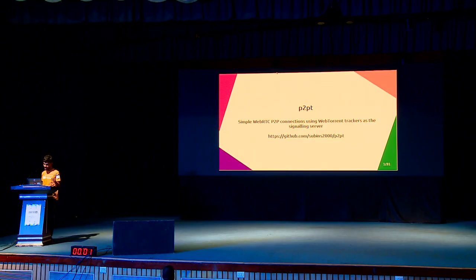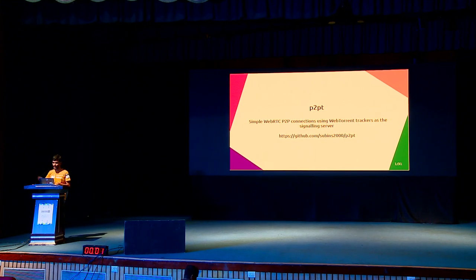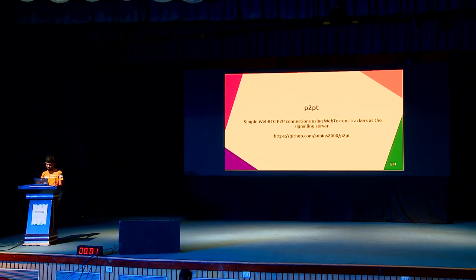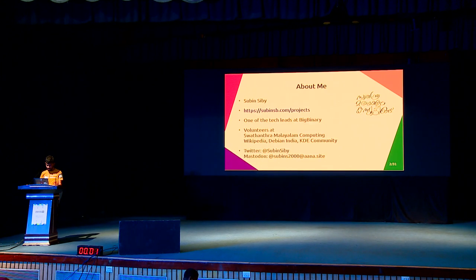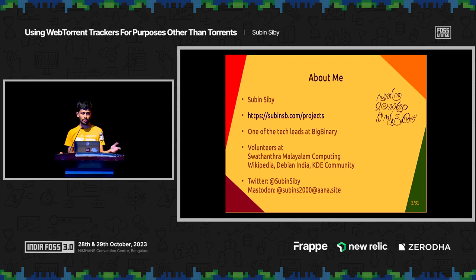It was a bit of a rush because we were making this last minute, just hacking. I'm going to talk about P2PT — this is a way to make peer-to-peer apps using web torrent trackers as the signaling server. About me: my name is Subin. I volunteer for Swathanthra Malayalam Computing, Wikipedia, Debian, and I used to contribute to KDE during Malayalam localization. I'm on Twitter and on Mastodon at subin_s2000 at ana.site. Ana means elephant in Malayalam.